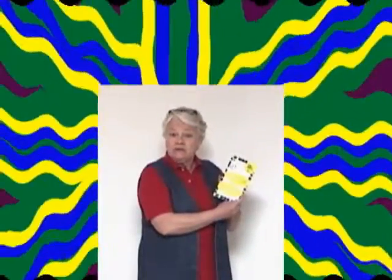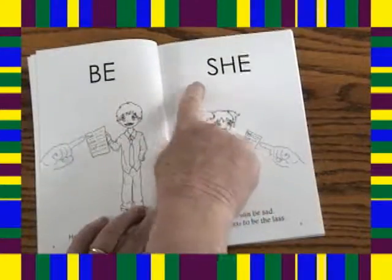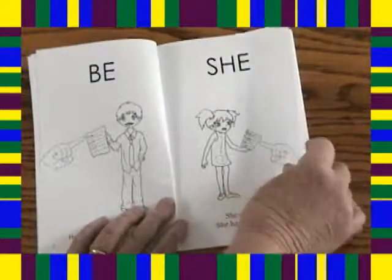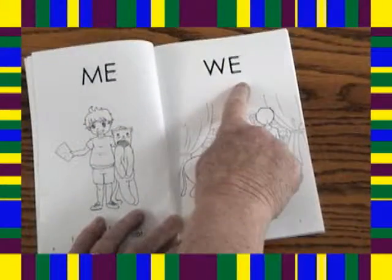Let the student move this up and down until they know all of these words. Then go to the book and at the top of each page, point to and say the simple words: he, be, she, me, we.